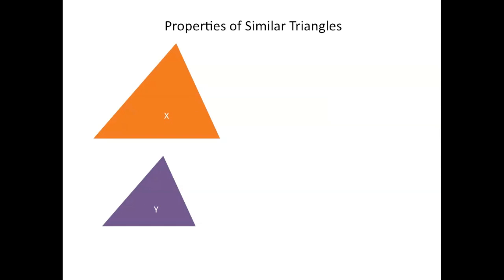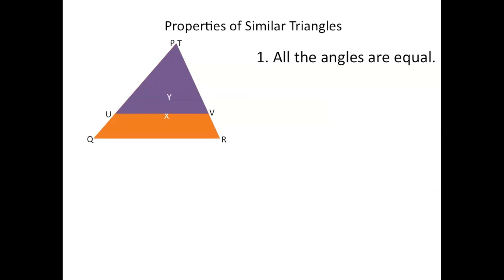So we have our two similar triangles, X and Y. The first property of similar triangles is that all the angles are equal. So let's label each of the angles. We have P, Q, R. And then for triangle Y, we have T, U, V. Though I have told you that both these triangles are similar, let's place triangle Y on top of triangle X to confirm whether their angles actually are equal. Let's see if P and T are equal — and as you can see, angle P and angle T fall on top of each other perfectly, so that means they're equal.